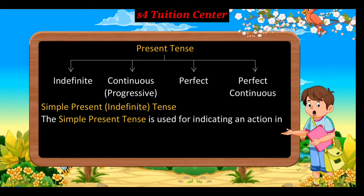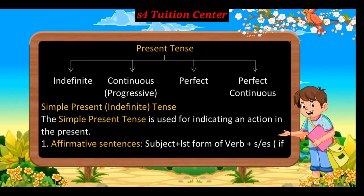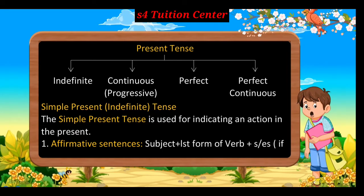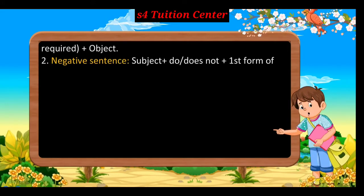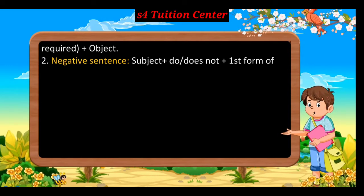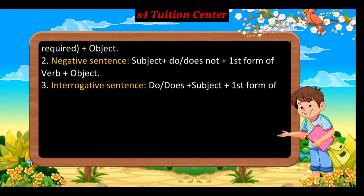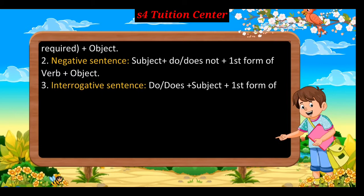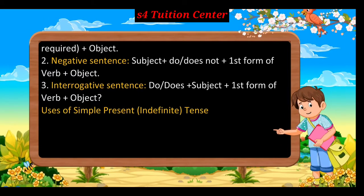Simple Present Indefinite Tense: The simple present tense is used for indicating an action in the present. First, affirmative sentences: subject + first form of verb + s or es (if required) + object. Second, negative sentence: subject + do or does + not + first form of verb + object. Third, interrogative sentence: do or does + subject + first form of verb + object + question mark.